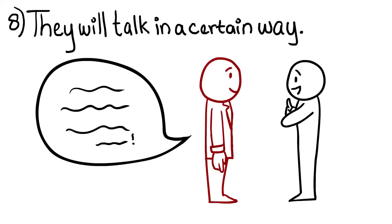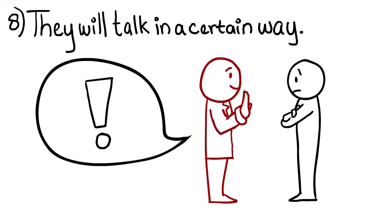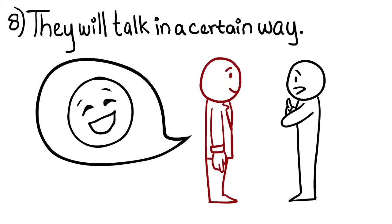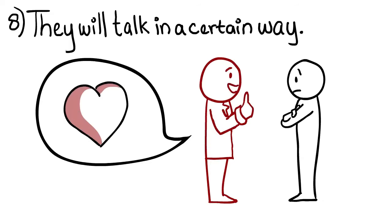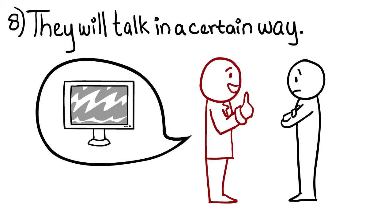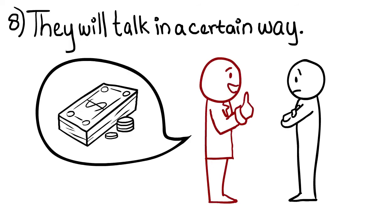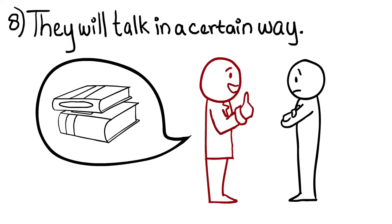8. Psychopaths Will Talk In A Certain Way. Psychopaths have trouble controlling their desires, and this can manifest itself in a very visible way. Psychopaths often seem very impulsive and are unable to focus on one thing for a long time, especially if they are attracted to numerous things at once. This can become obvious in the way a psychopath talks and communicates.